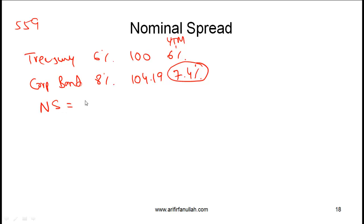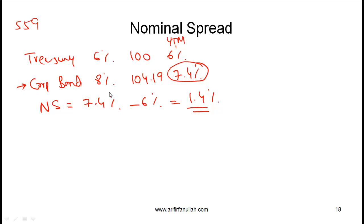The nominal spread here will be equal to 7.4% minus 6%, which equals 1.4%. This spread of 1.4% tells us how much more investors are demanding for this corporate bond. The return on a corporate bond will always be more than the yield on a comparable treasury bond because it is more risky, and that extra 1.4% spread is compensating the investor for the extra risk.